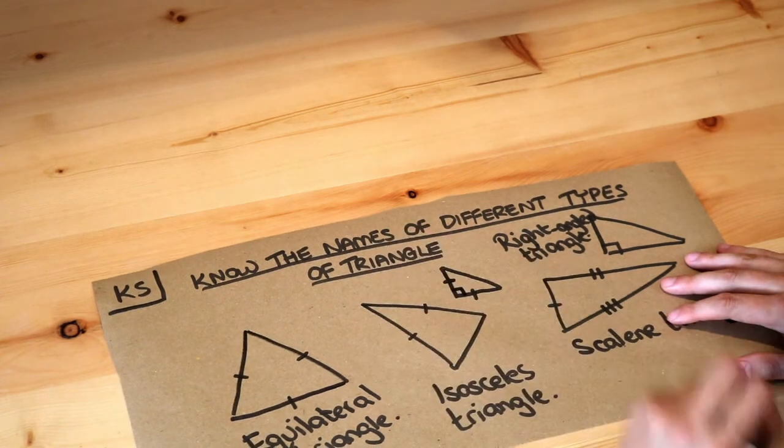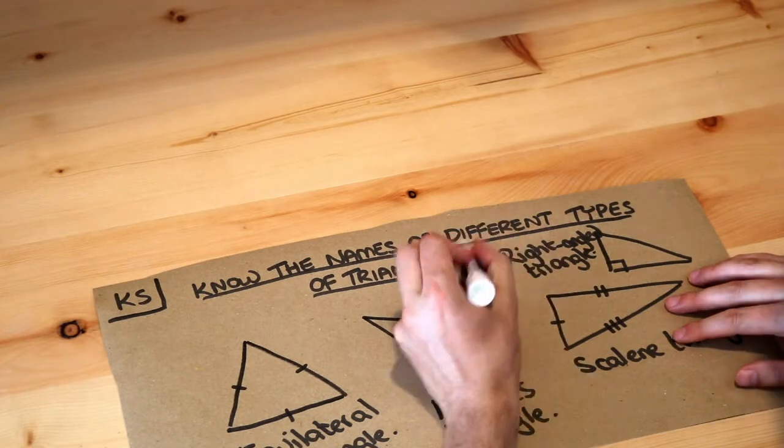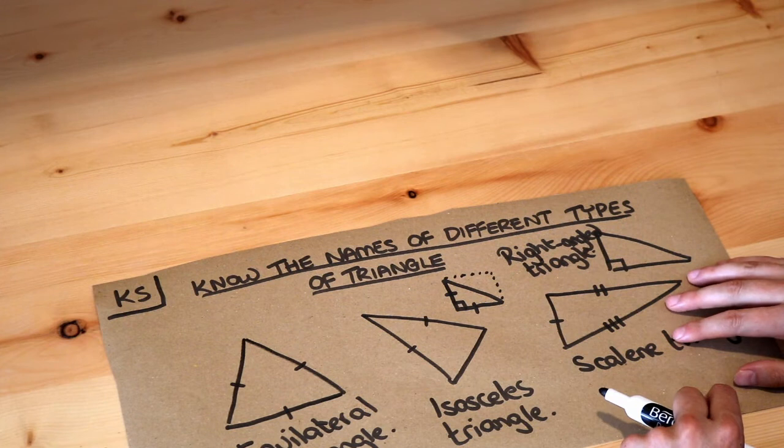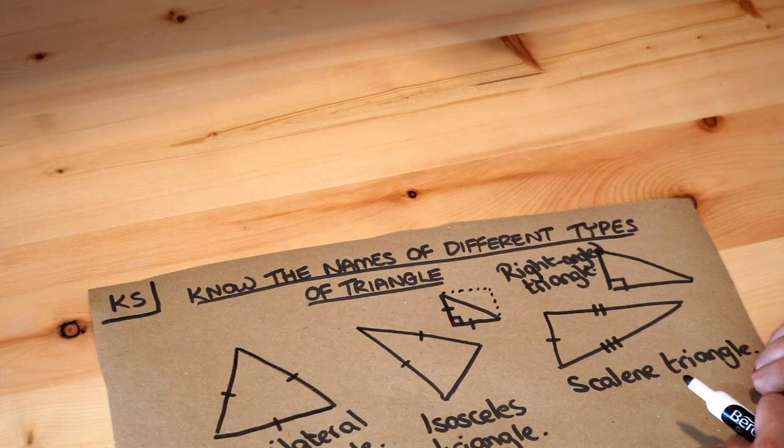...so if I was to draw it like this where these two lengths are the same and this is a right angle—so can you see that this is half a square?—that would be a right-angled isosceles triangle, whereas this is a right-angled scalene triangle.